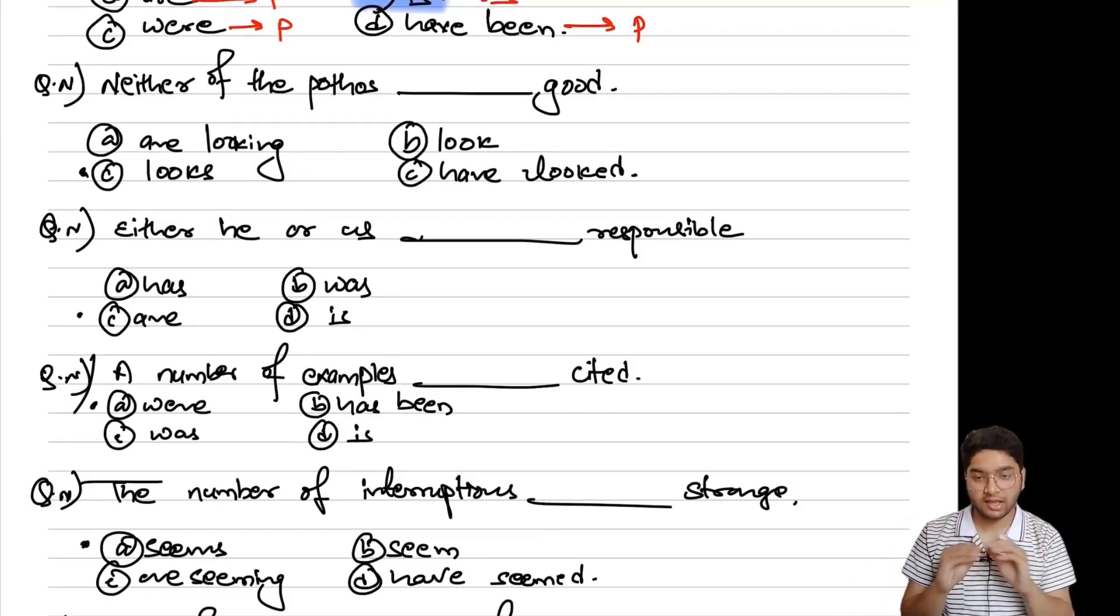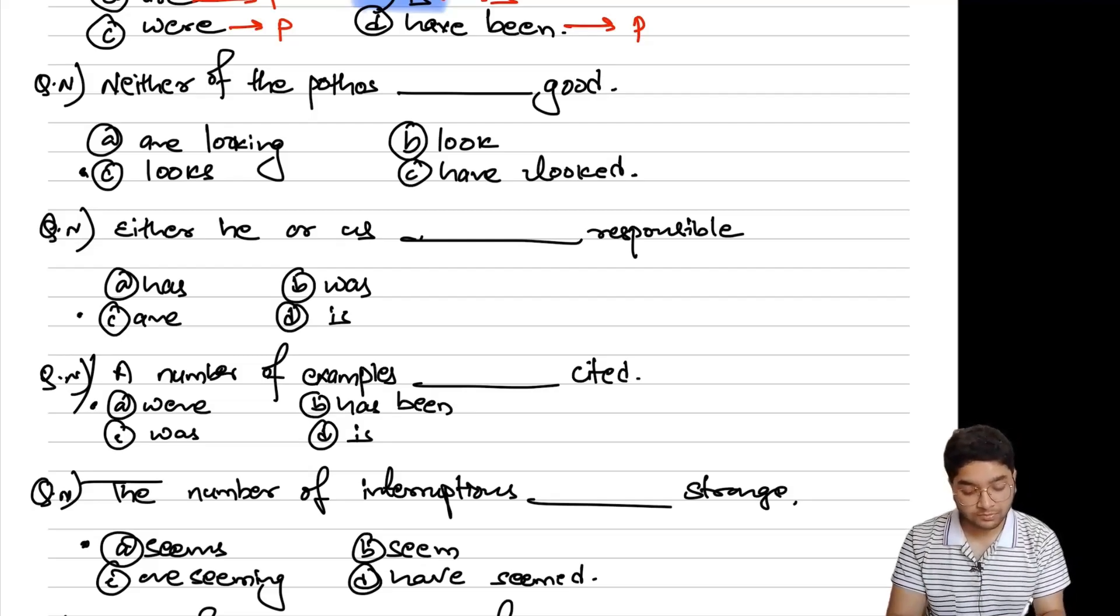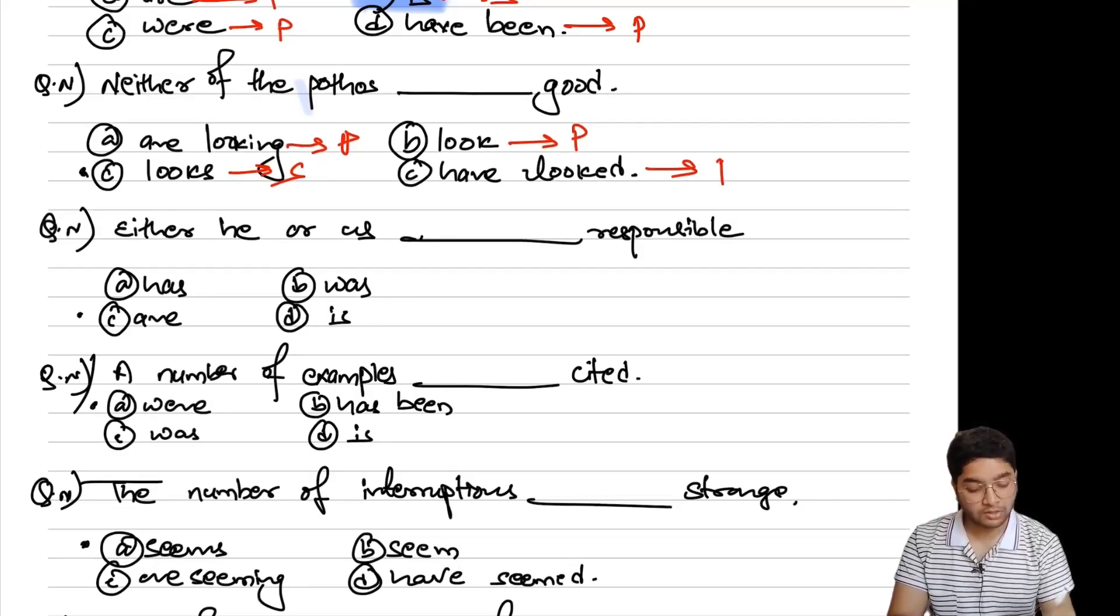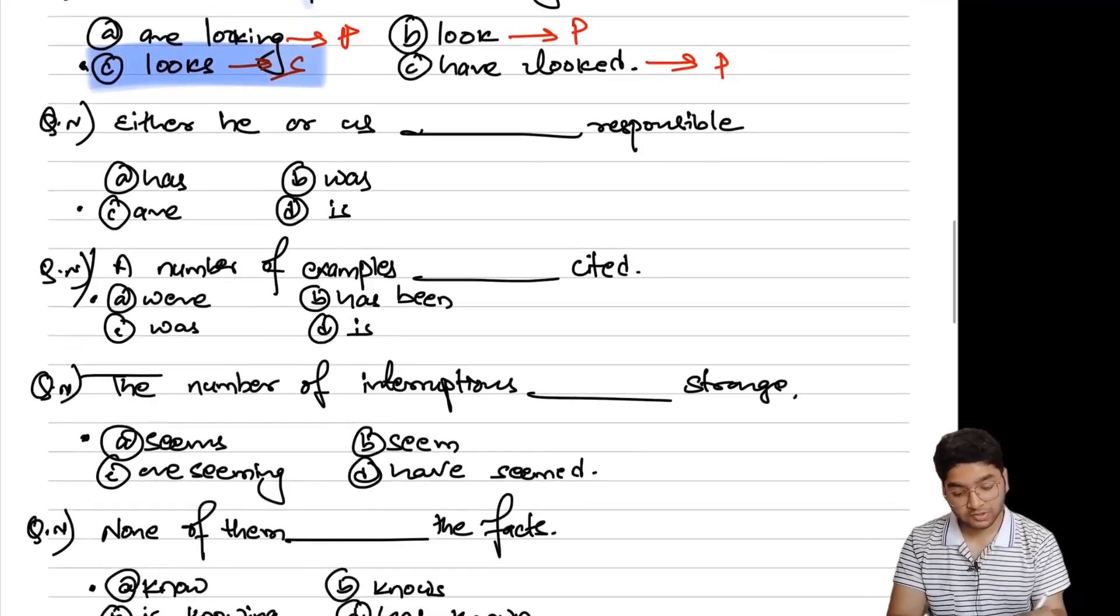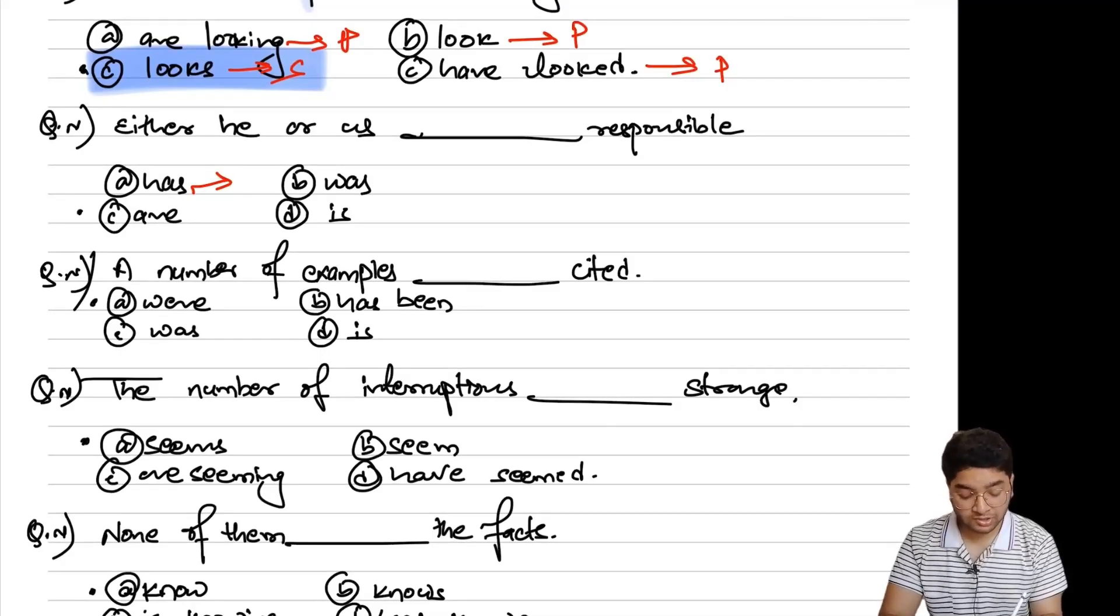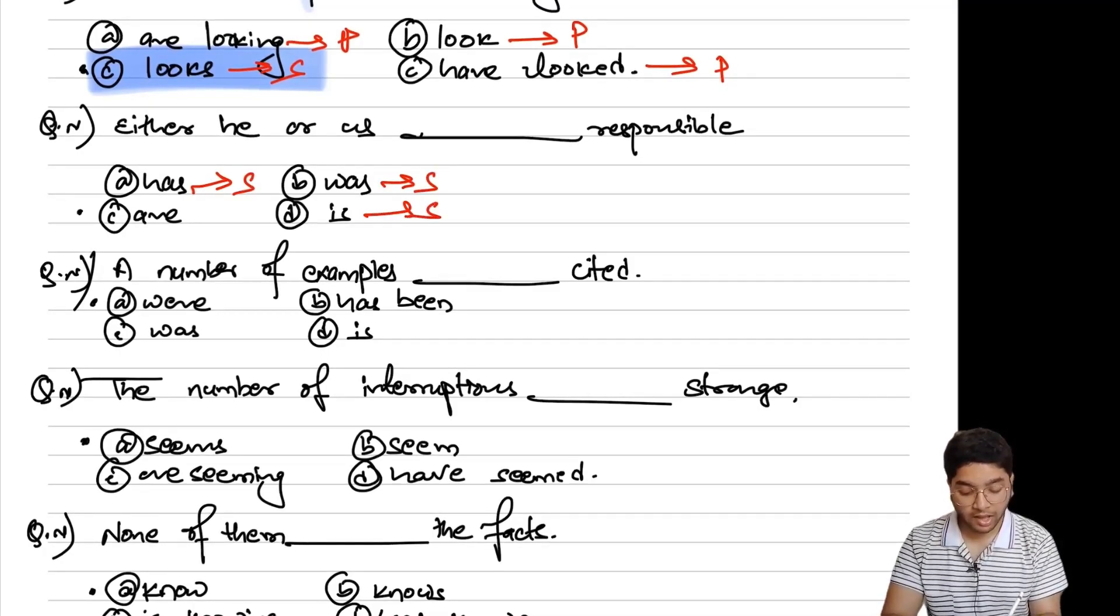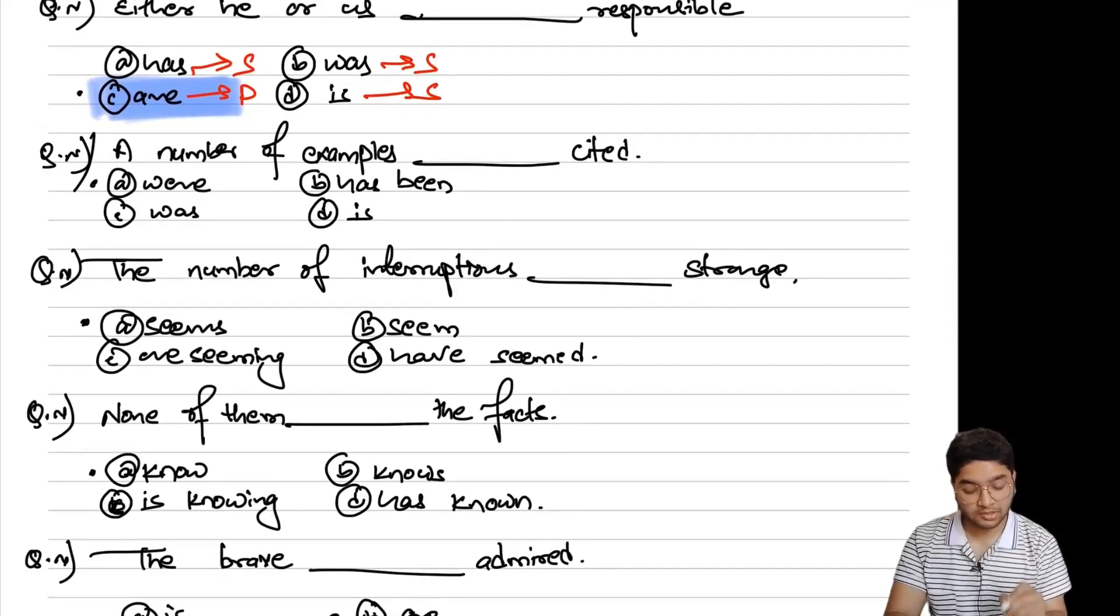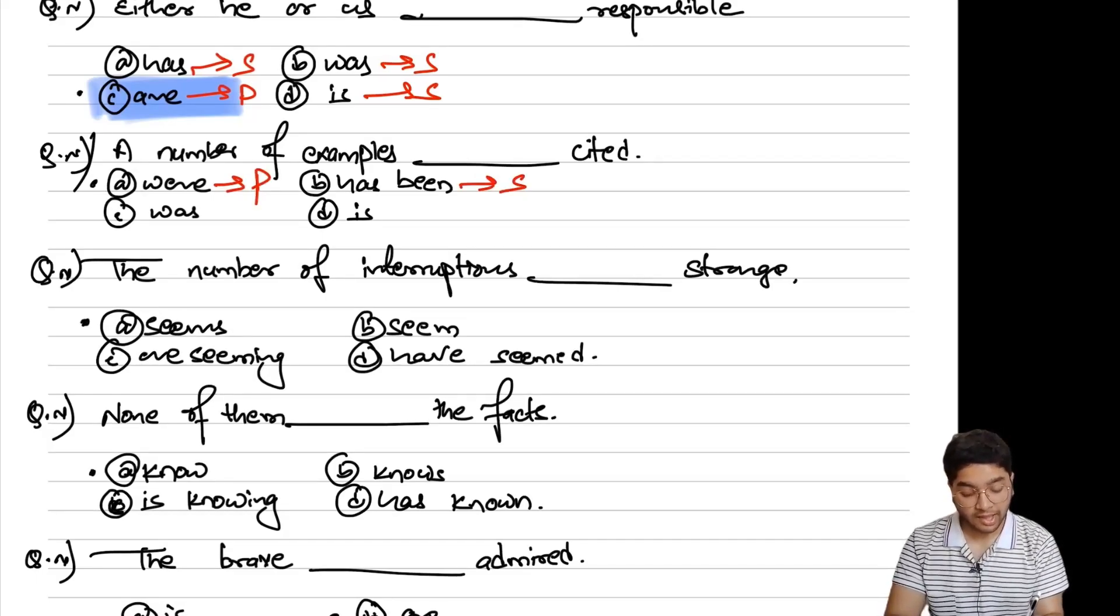Question number two: Answer. Neither of, neither nor, option. Are looking, look, looks. Singular has look, singular answer. Has, singular is singular. Singular are. Has been singular, has singular.